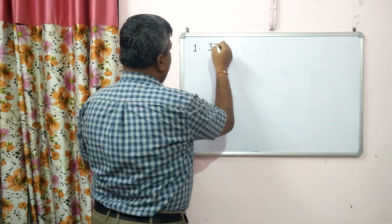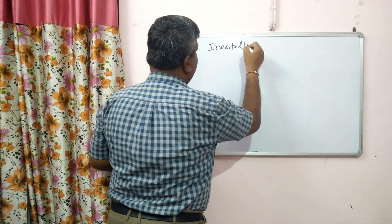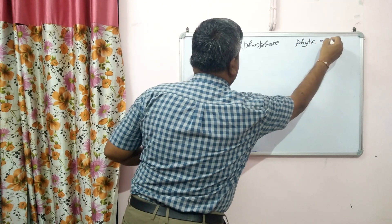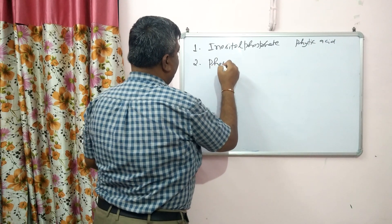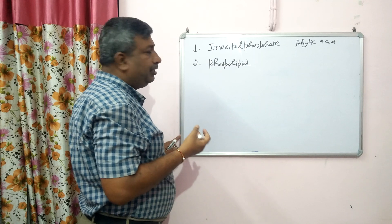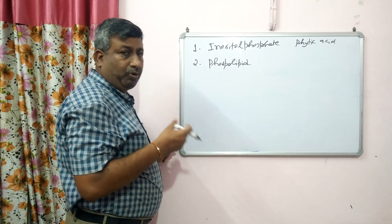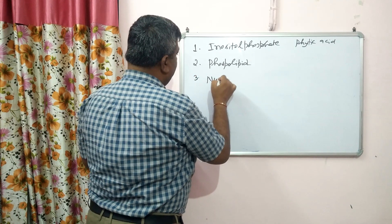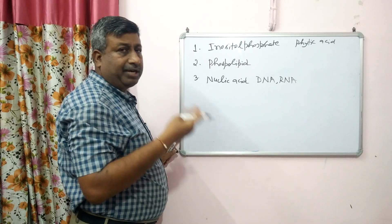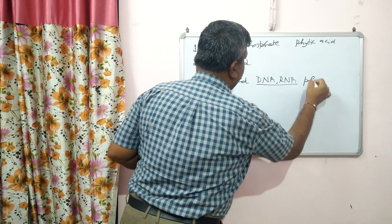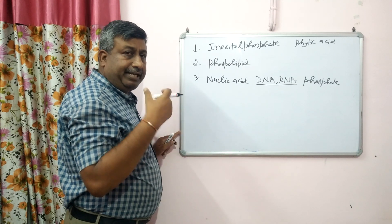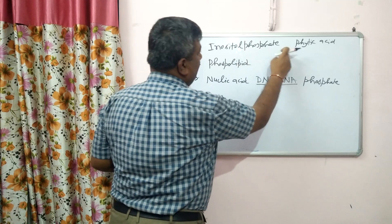So summarizing the organic forms: first are inositol phosphates, and the important one among these is phytic acid (hexaphosphate). Another organic form is phospholipids, which are released by plants and are present in bio-membranes. Phospholipids are degraded quickly, so their decomposition is very fast. Then there are nucleic acids — DNA and RNA — which are also composed of nitrogen base + sugar + phosphate, and these are also decomposed quickly.